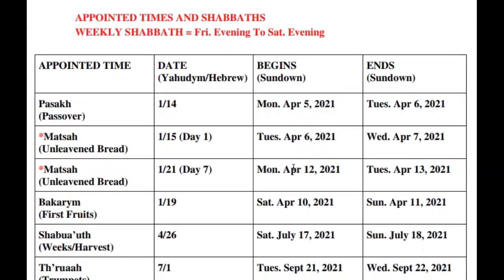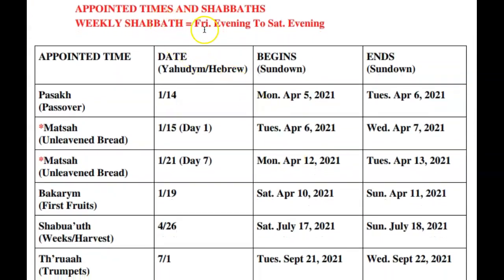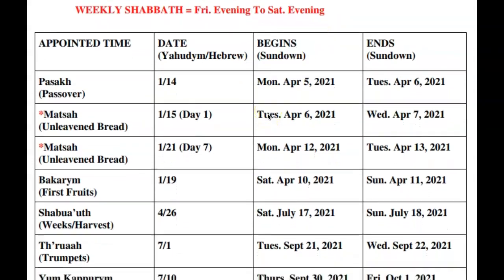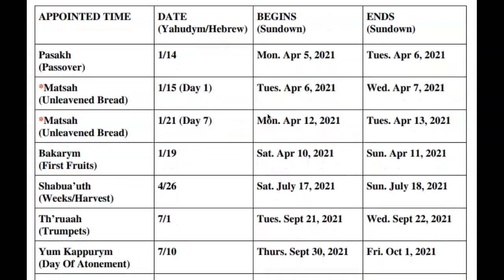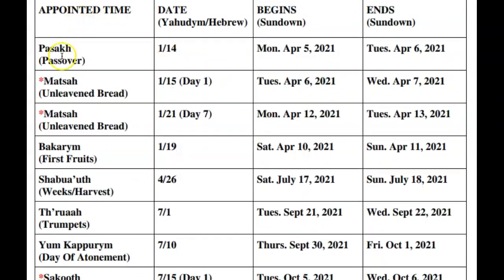There are also the appointed times and Shabbats. The weekly Sabbath goes from Friday evening to Saturday evening. There are seven appointed times listed. The first appointed time is Pesach or Passover. According to the Ya Udym or the ancient Hebrew date, according to Leviticus chapter 23, Passover will be from the evening of Monday April 5th, 2021, all the way until sundown Tuesday April 6th, 2021.